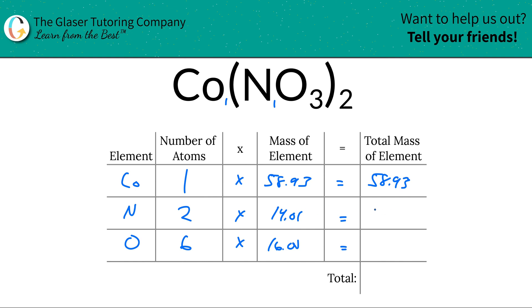So when we multiply this across, it would be 58.93 units of mass. Then for nitrogen, this would work out to be 28.02. And then same thing for oxygen, you'd take 6 times 16, so it would be 96 total units of mass there.